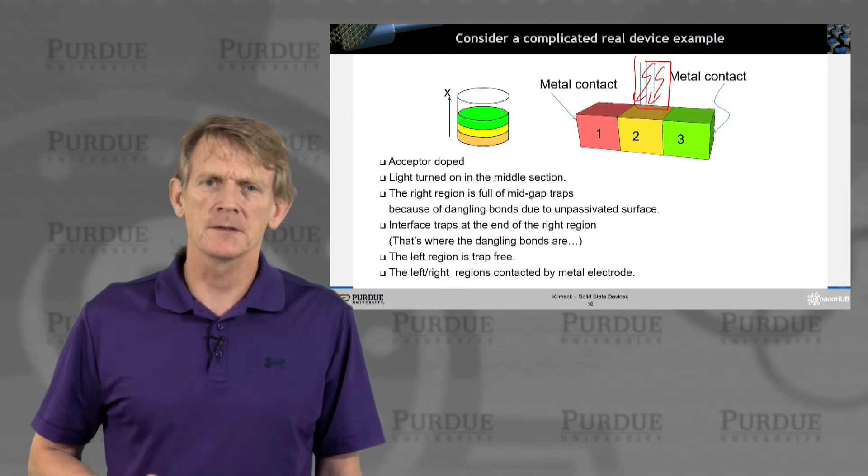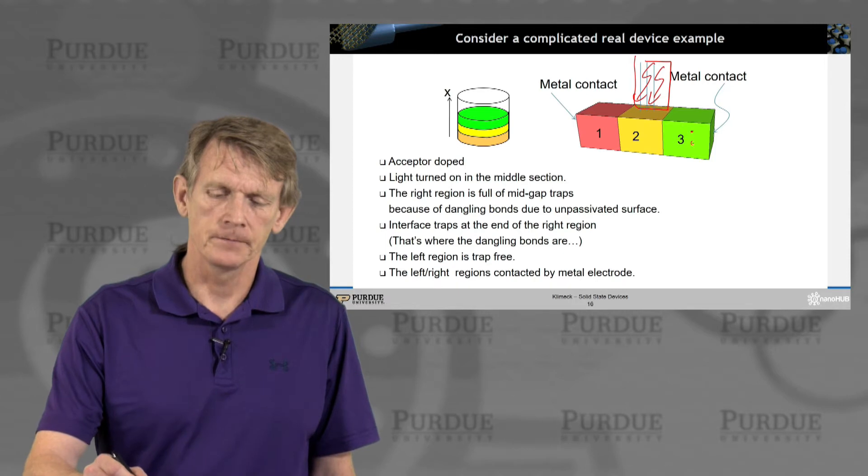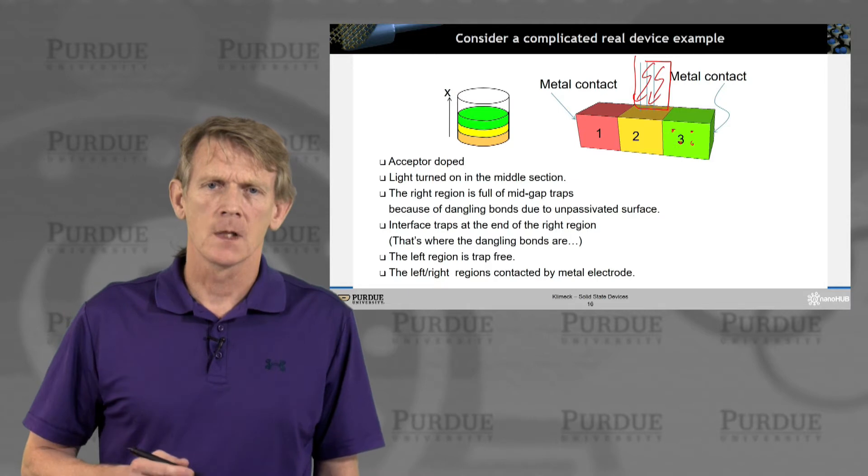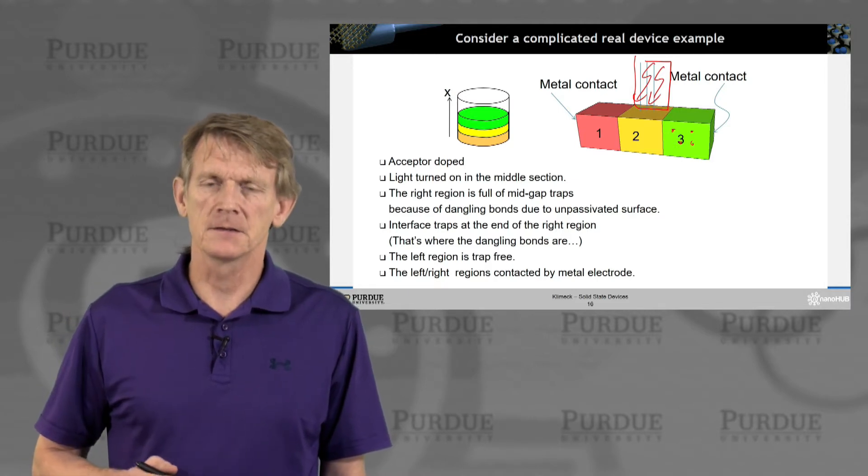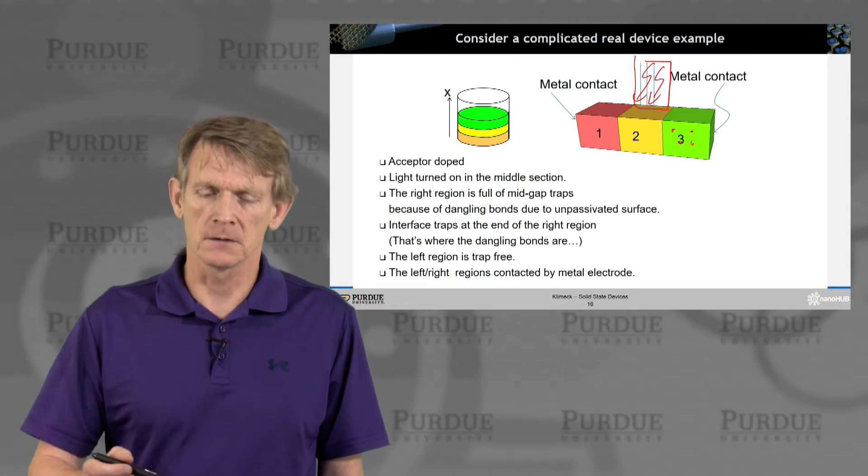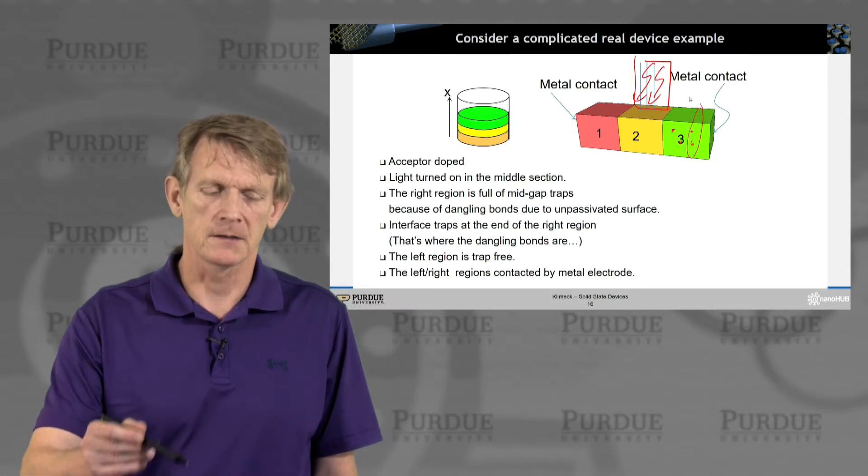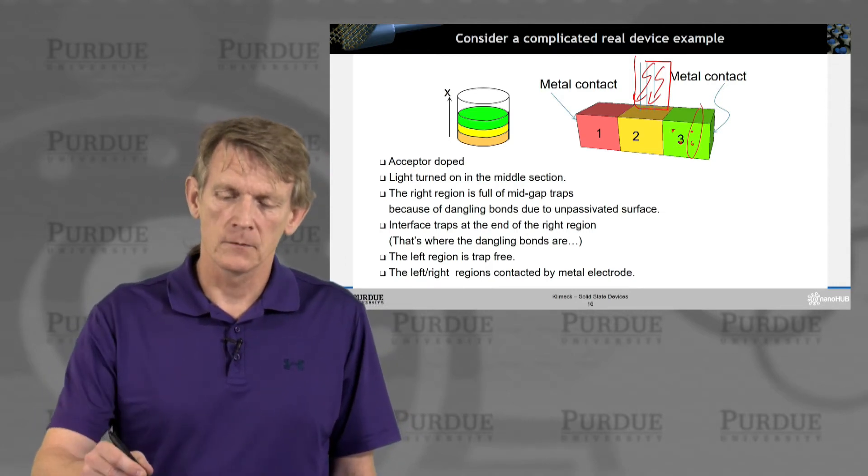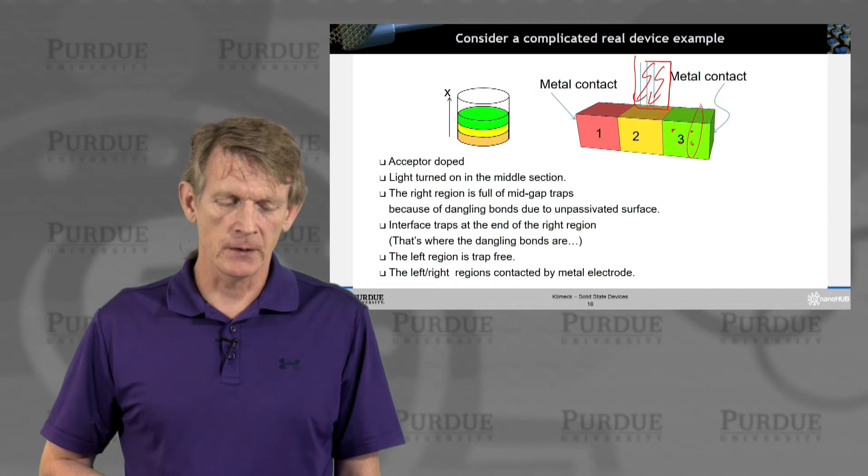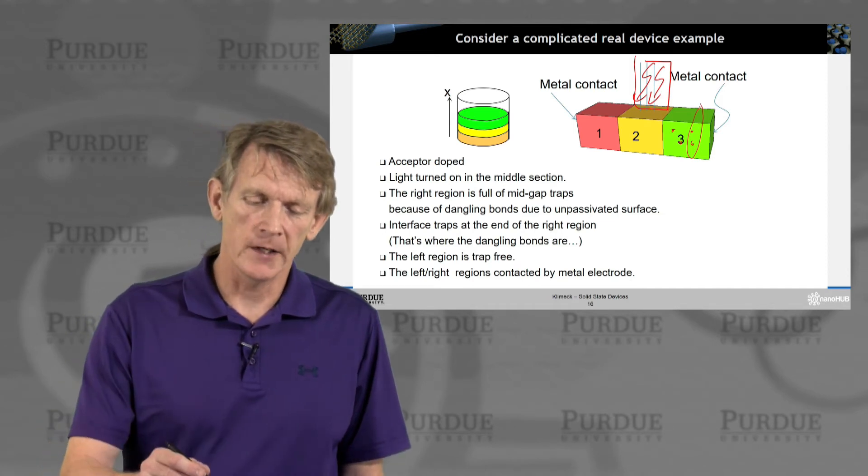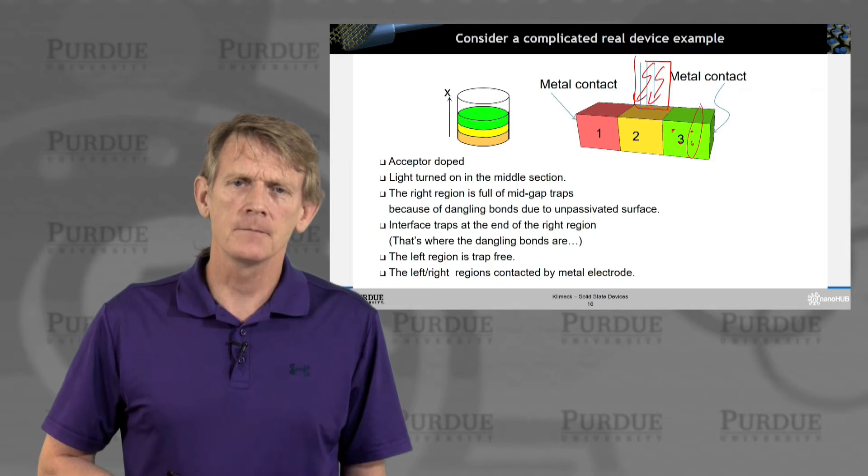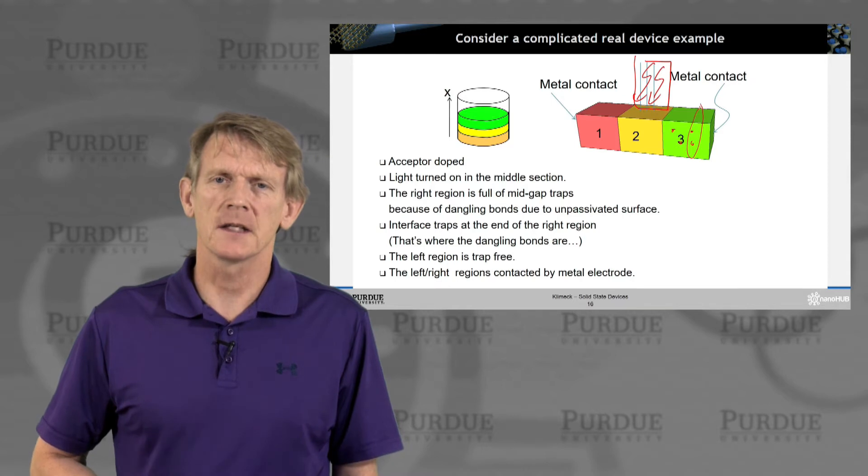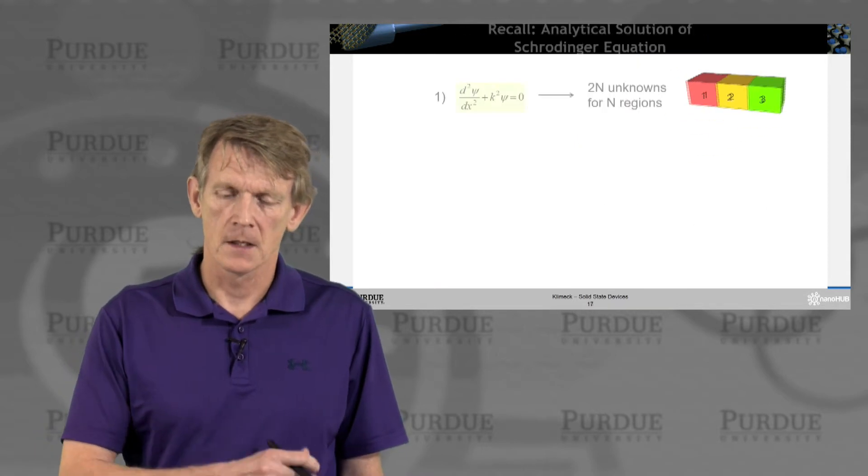Let's assume that the right region here is full of traps, so full of mid-gap traps. Maybe we have an unpassivated surface around the device like this. Interface traps at the end, on the right region, we'll consider as well. Let's assume that the left region here in red is trap-free, and that the left and right regions are contacted by some metal electrode.